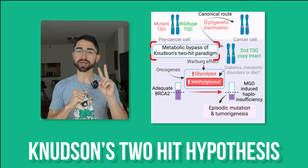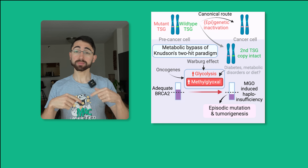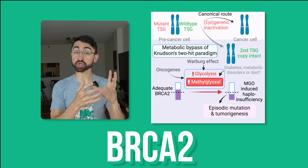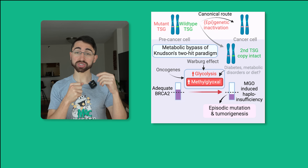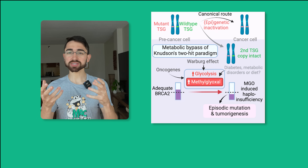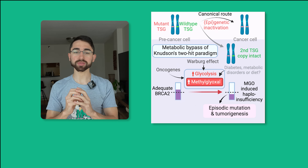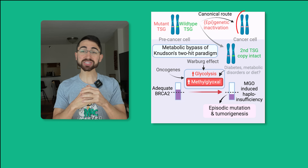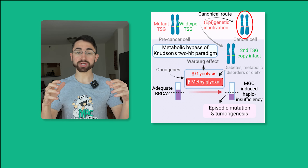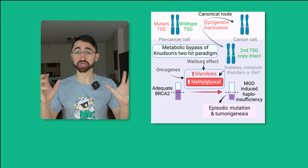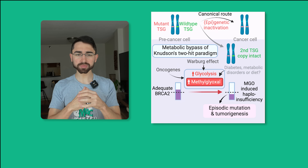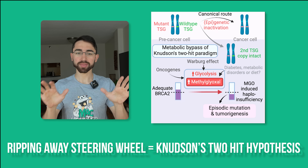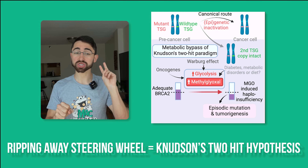This is known as Knudsen's two-hit hypothesis. For example, you can be born with a break in one copy of the gene, say BRCA2, which is a tumor suppressor gene. But then sometime later in life, it's thought that you have to lose the other copy. This is called loss of heterozygosity. And that's when the brake is fully broken, and you develop more mutagenesis and cancer — you crash the car. This is similar to ripping away the steering wheel entirely, erasing the steering wheel. That's loss of heterozygosity, that's Knudsen's two-hit hypothesis.